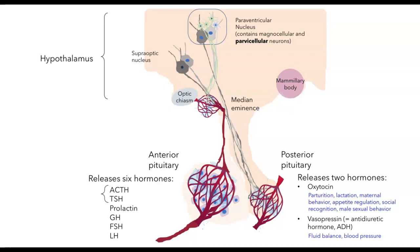Let me give you some specific examples. There are two sets of parvacellular neurons in the paraventricular nucleus that regulate the release of hormones from the anterior pituitary. One set produces CRH, corticotropin-releasing hormone. If that compound is released in the median eminence and carried to the anterior pituitary, it leads to the release of ACTH. There's another set releasing thyrotropin-releasing hormone, and if that compound is carried to the anterior pituitary, cells there respond by releasing thyroid-stimulating hormone.